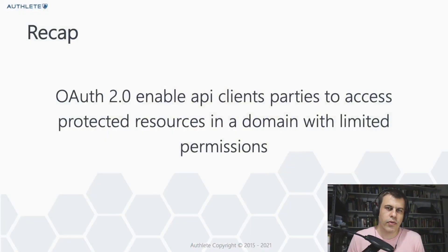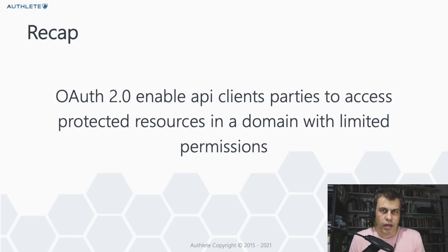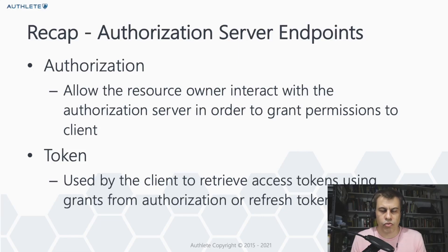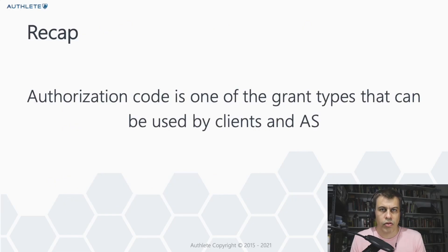Authorization code flow is a grant type of OAuth2. OAuth2 enables API clients to access protected resources on domains with limited capacity. The authorization server is required to support at least two endpoints on the OAuth specification: the first one is the authorization endpoint, where the resource owner interacts in order to grant access to the client, and the second endpoint is the token endpoint, where the client uses the authorization code to fetch a token. Authorization code is one of the four grant types defined on the OAuth specification.